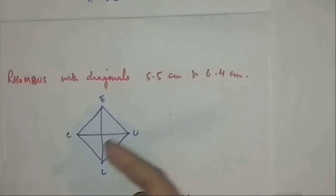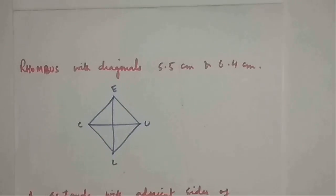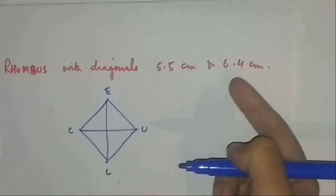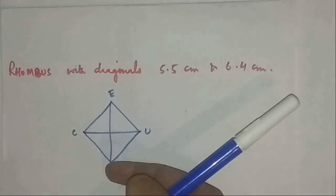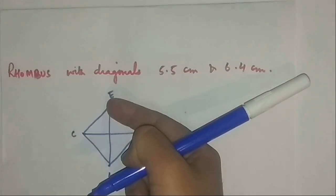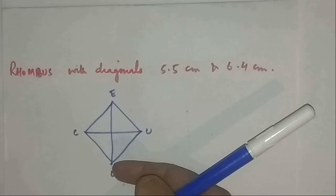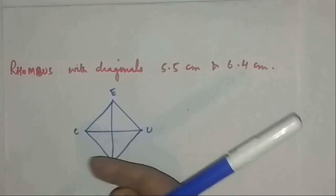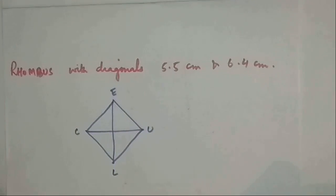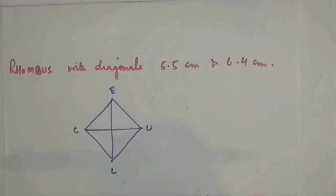You will first make the diagonal as a base, and then you will make the perpendicular bisector, and then bisecting. Like if this is 6.4, 3.2 will lie on the upper side and 3.2 will lie on the lower side. This question has already been explained. You may check the previous videos or the early part of the video.